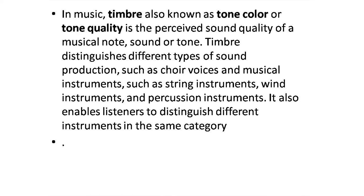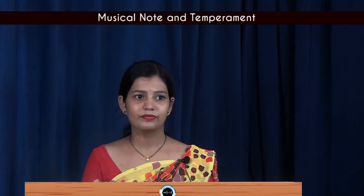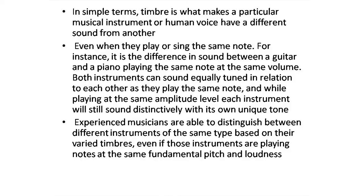Timbre also enables listeners to distinguish different instruments in the same category. In simple terms, timbre is what makes a particular musical instrument or human voice different from one another, even when they play or sing the same note. For example, it is the difference in sound between a guitar and a piano playing the same note at the same volume — we can still differentiate between them because of timbre.